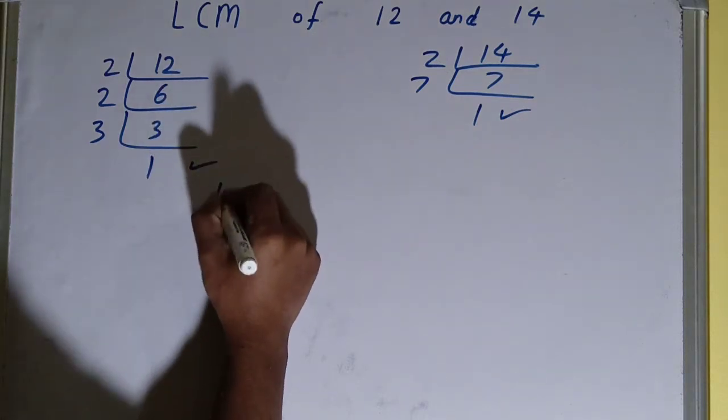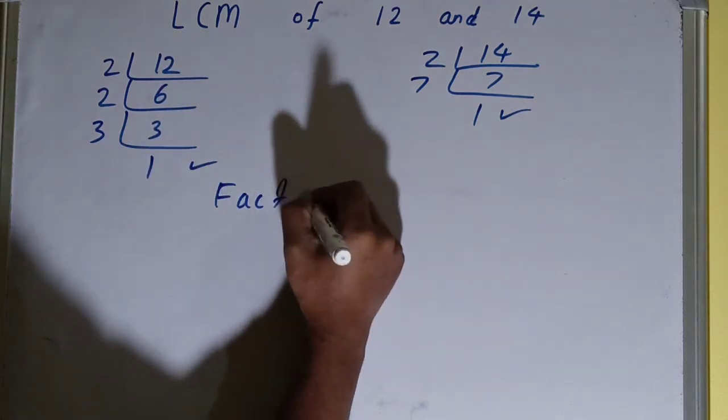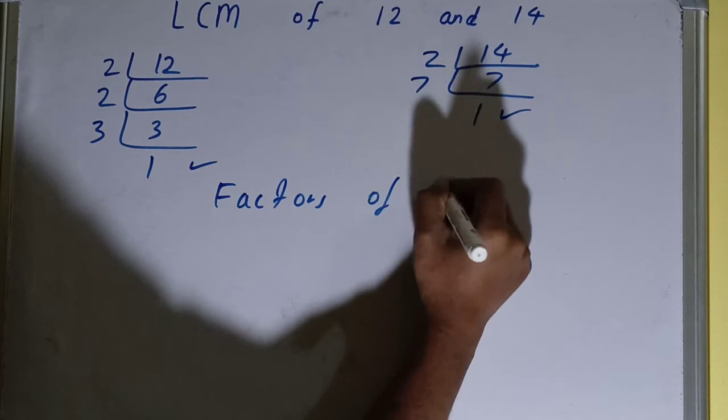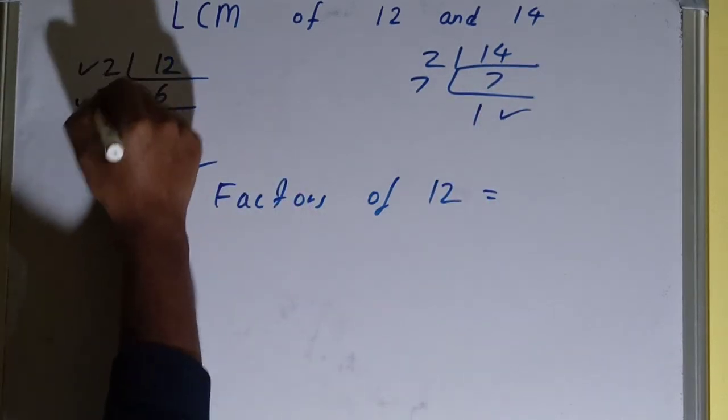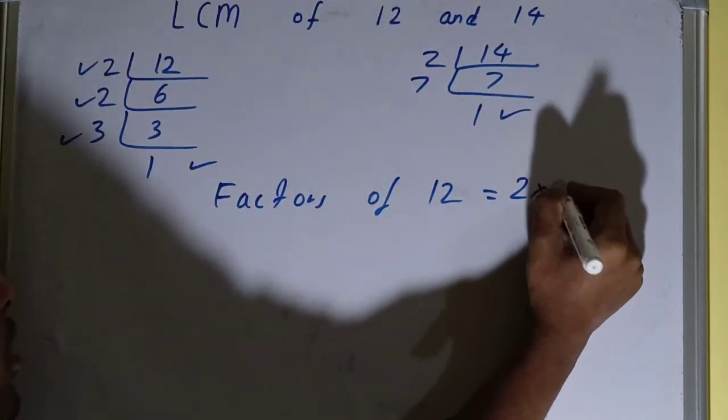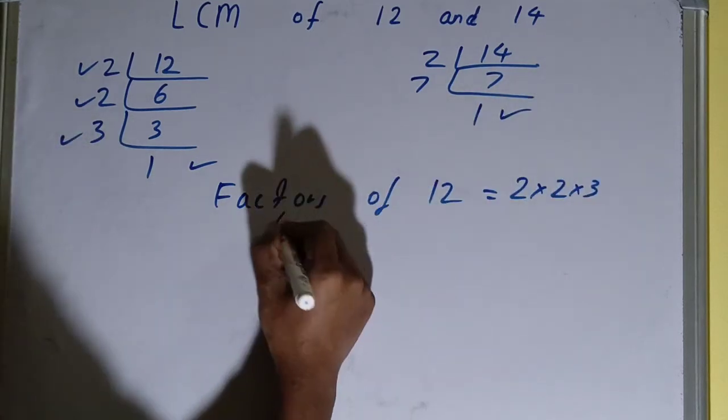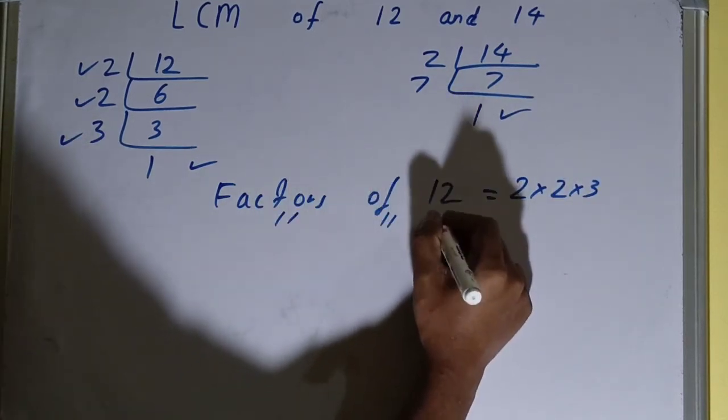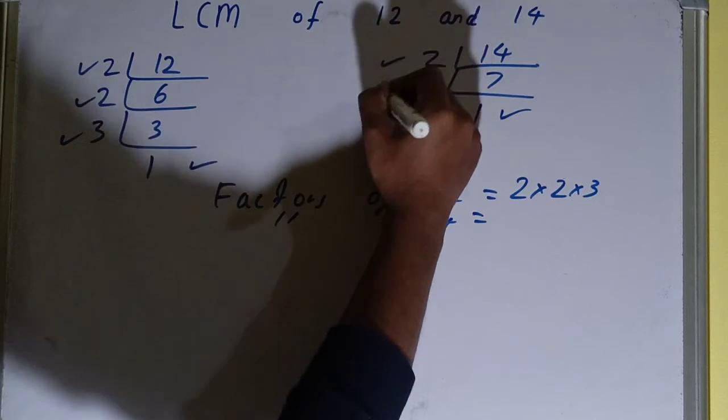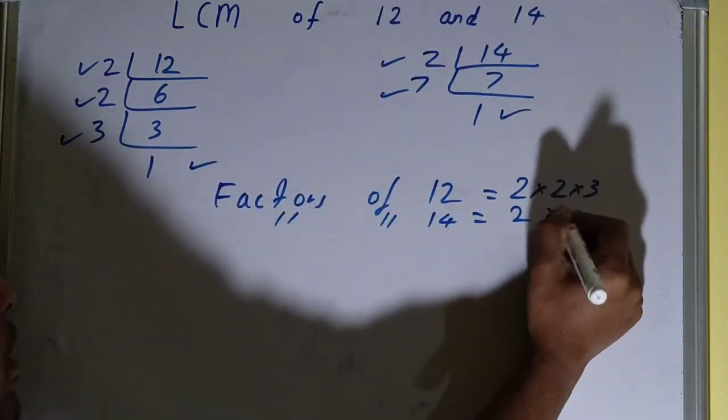The next thing you need to do is write down the factors you got from each of the numbers. So factors of 12: what is it? 2 × 2 × 3. Now factors of 14: what is it? 2 × 7.